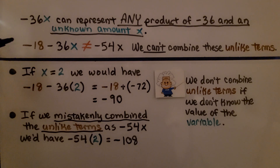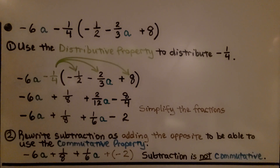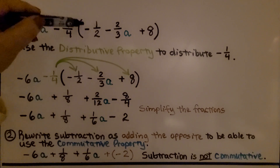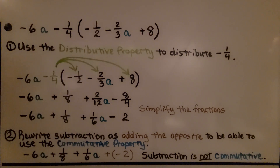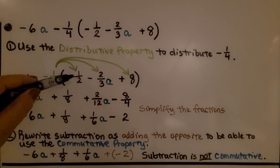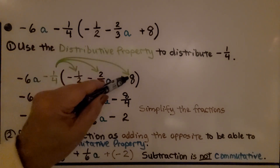So the only thing we can do is simplify it as negative 18 minus 36x — that's as far as we can go. Next expression: negative 6a minus 1/4 times negative 1/2 minus 2/3 a plus 8. The first thing we do is use the distributive property to distribute this negative 1/4 to the negative 1/2, to the negative 2/3 a, and to the positive 8.